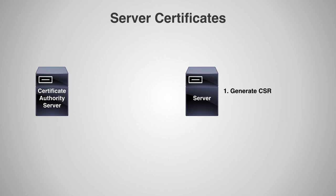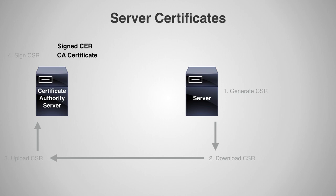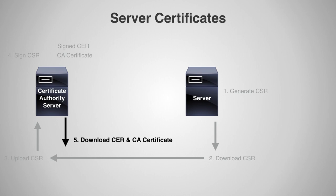The first thing you have to do is generate a certificate signing request, also referred to as a CSR. Then you have to download that CSR so that you can upload it to your certificate authority server. Then you use your certificate authority server to sign your CSR. Once you do this, you then need to download that signed certificate along with a CA certificate. The CA certificate basically points to the authority — if you want to verify this signed certificate and verify that it's valid, you need to go to that authority.